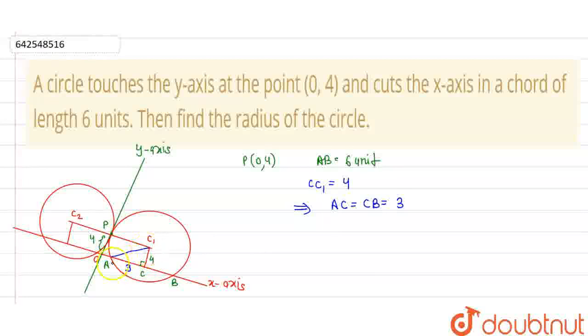This implies that AC equals CB, this is equal to half of AB, that is 3. Now, AC is 3 and is perpendicular to it. So, we can find the C1A length according to Pythagoras theorem. So, in triangle AC1C,